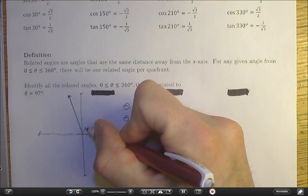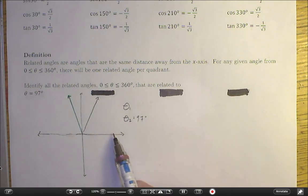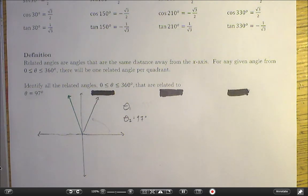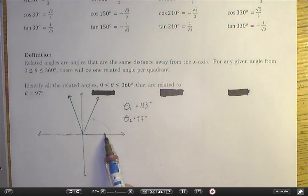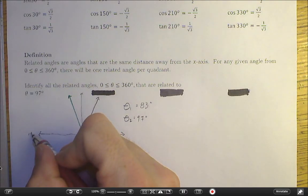My quadrant 1 related angle arguably may be the most important related angle. This was represented by alpha in the courseware learning. I call this theta 1. How far is this angle, now measured from standard position up to here, away from the x-axis? Well, it is 83 degrees. It is the exact same distance away from this x-axis as 97 was away from 180 degrees.